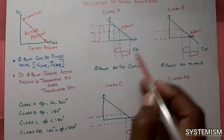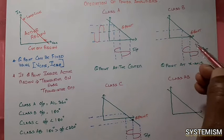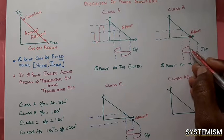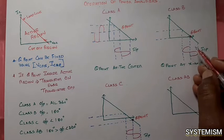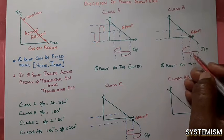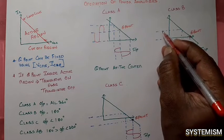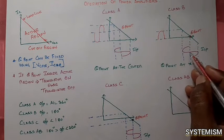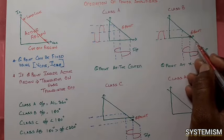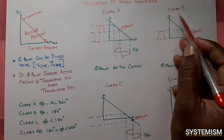For a class B amplifier, output should come only for 180 degrees. So we fix the Q point at the X axis. When we apply the input signal and the input voltage increases, the Q point moves into the active region, so you get output for 180 degrees. After that, if the input decreases below this value, the Q point enters inside the cutoff region and no output will be obtained. This is how a class B amplifier operates.